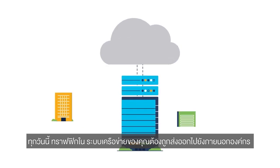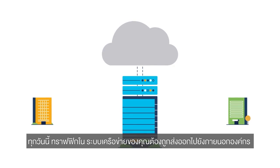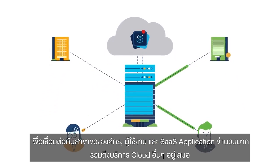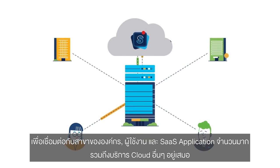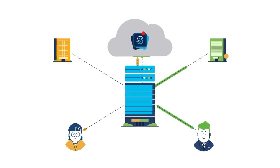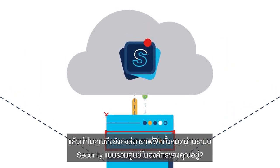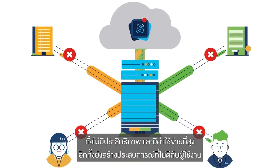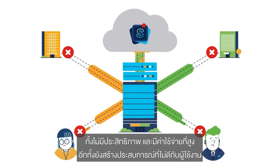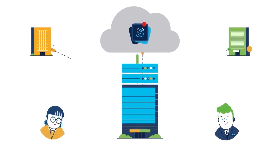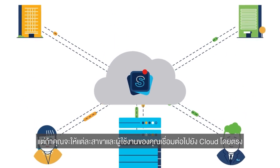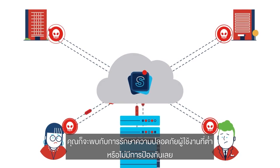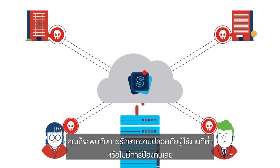Your network traffic now ventures far outside traditional perimeters to an increasing amount of remote locations, roaming users, and SaaS apps. And more of it's going to the cloud. So why backhaul and bottleneck that traffic through centralized security appliances? It's inefficient, expensive, and leads to a poor user experience. And when your remote offices and users decide to bypass the on-premises security stack altogether, you go from slow security to no security.